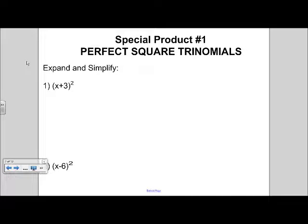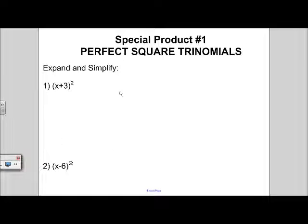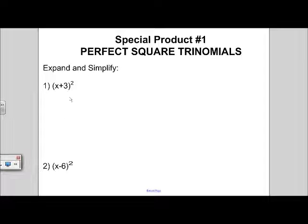First, we're going to learn about perfect square trinomials. Before we learn the rule for that, let's work on expanding two examples using what we know about the FOIL method.